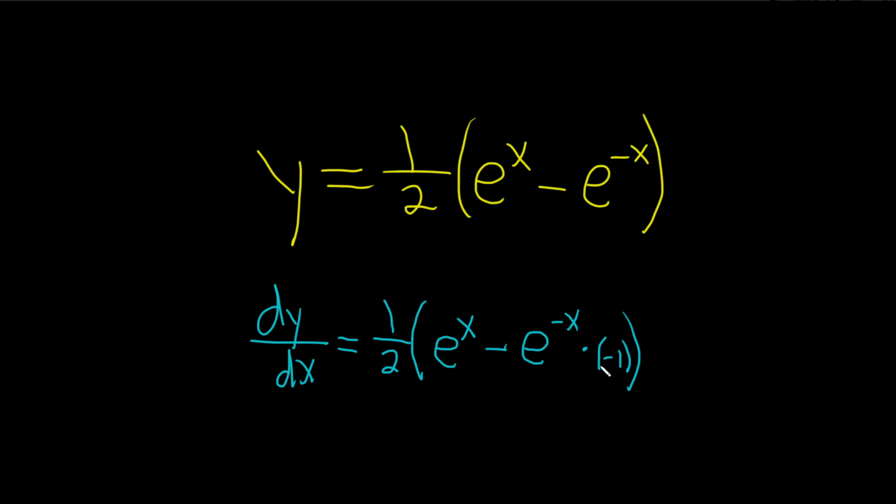We're almost done. There's a negative one here being multiplied by this, so we can basically make this a positive now. So this is one-half times e to the x plus e to the negative x, and that would be dy/dx, which is the derivative of y with respect to x.